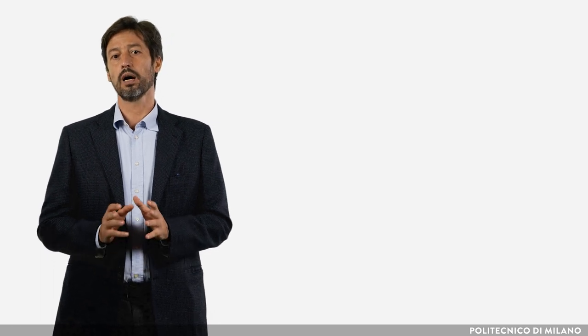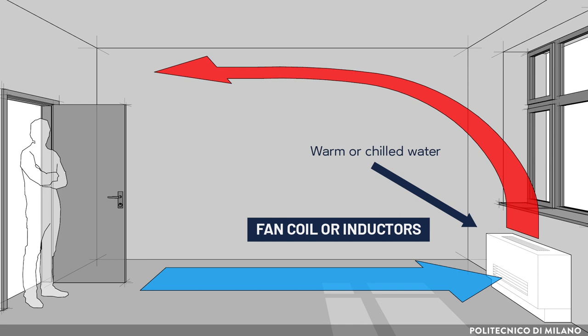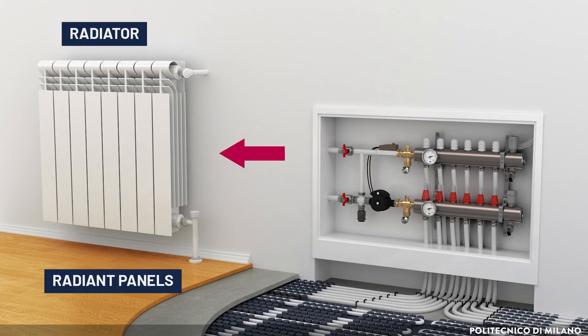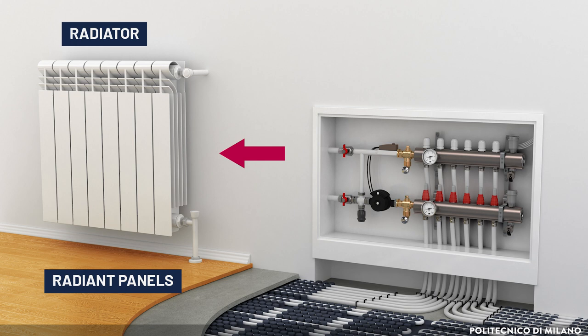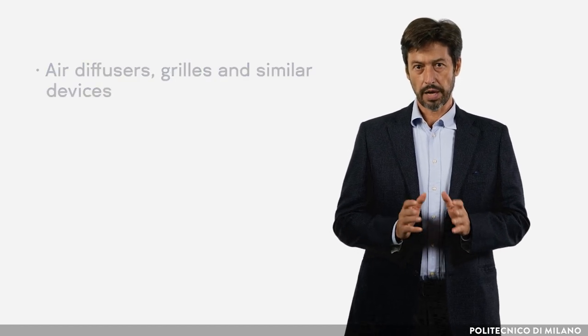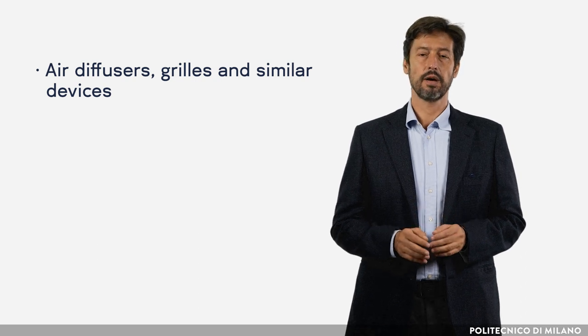The room terminals are voted to deliver the heat carrier to the ambient to warm or cool it. When using water, they are usually fan coils or inductors for all-water or air-water systems, radiators for all-water systems, and radiant panels for all-water or air-water systems. For air distribution and extraction, we have air diffusers, grills, and similar devices, utilized in all-air or air-water systems.